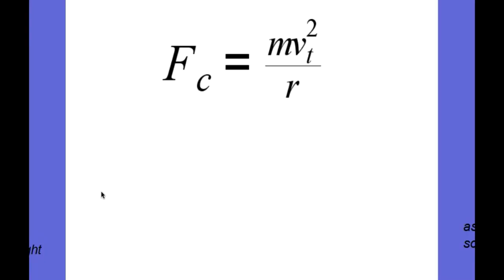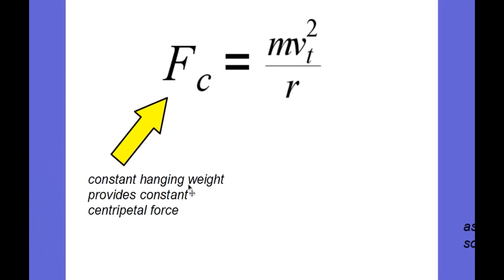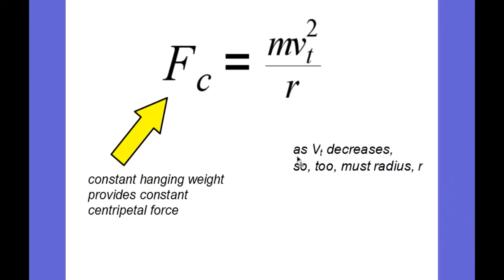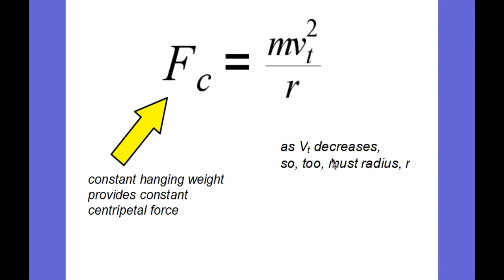Let's apply Newton's second law for uniform circular motion to this situation. The centripetal force equals mv²/r. The centripetal force is provided by the hanging weight and is not changing, so the tension in the string is constant — meaning the right side of the equation must also remain constant. As tangential velocity decreases due to slight friction, the radius must also decrease to keep this fraction constant, equal to the centripetal force.